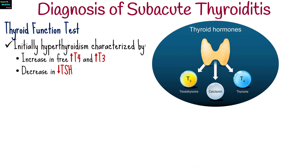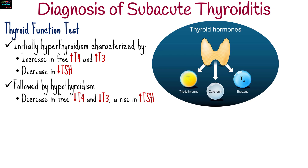Diagnosis of subacute thyroiditis includes clinical history and physical examination. Thyroid function tests may initially show hyperthyroidism, characterized by an increase in free T4 and T3 and a marked decrease in TSH, followed by hypothyroidism as the inflammation progresses and thyroid stores are depleted.